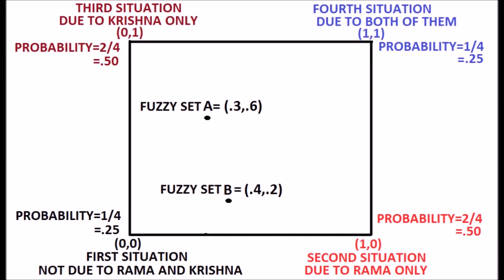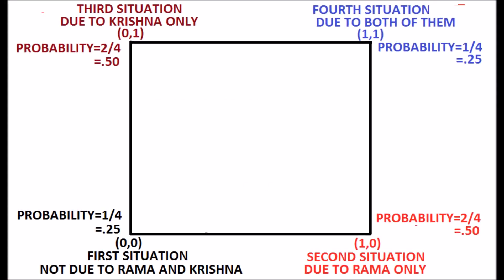These two points are inside the unit square. Now it is clear, there are many situations inside the square. The probability estimates uncertainty based on the two-valued logic, 1, 0, represented at the four corners of the square.